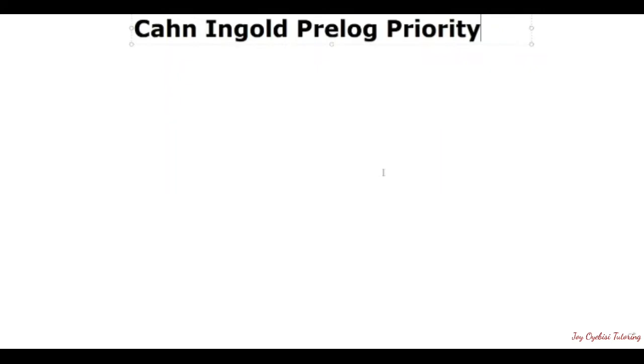In this video I'm going to be showing you how to assign R and S configuration using Cahn-Ingold-Prelog priority.